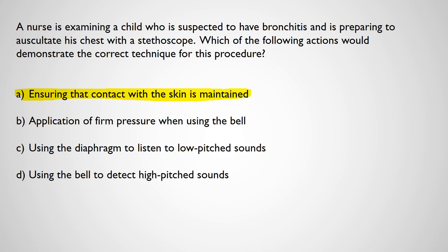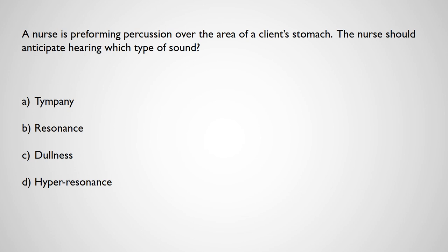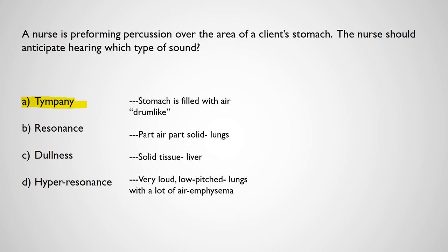A nurse performing percussion over the stomach should anticipate hearing which type of sound: timpani, resonance, dullness, or hyperresonance? The answer is timpani — the stomach is filled with air, producing a drum-like sound. Resonance, heard over lungs, is part air and part solid. Dullness is heard over solid tissue like the liver. Hyperresonance is a very low-pitched sound heard in lungs with excessive air — as in emphysema. Make sure you review these and know what's normal and where you should hear each sound.